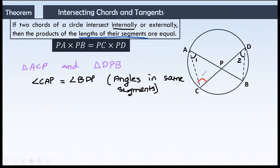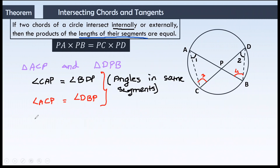Similarly, angle ACP and angle DBP are also angles in the same segment, formed by the arc AD. So angle ACP is equal to angle DBP, by the same reason — angles in the same segment. Both segments are different for these two different equations. Within two triangles, if two pairs of angles are equal, we know the triangles are similar. So triangle ACP is similar to triangle DBP by AA similarity rule.